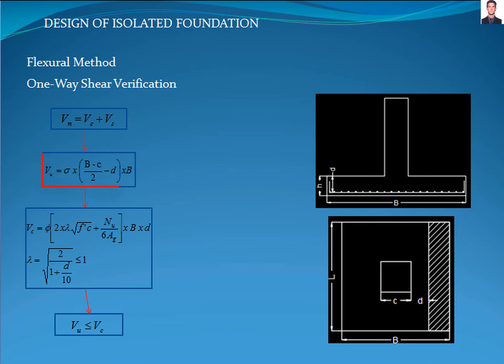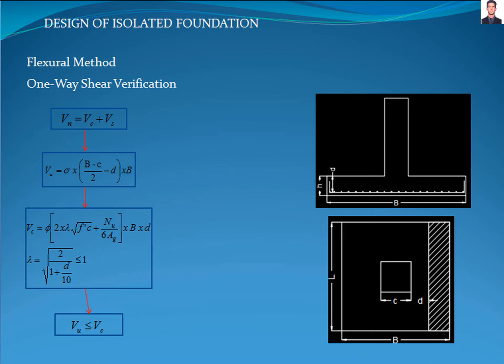Now we calculate Vu with this equation, which is the factored shear force that acts in the section, and calculate Vc with the equation in table 22.5.5.1 of the ACI 318 standard. Phi is the reduction factor equal to 0.75 according to table 21.5.1. Nu is the actual axial force that acts in the foundation, which is 0. Lambda is a factor calculated with equation 22.5.5.1.3 of the ACI 318 standard and cannot be greater than 1. We then verify that the factored shear force is less than the shear strength of the concrete.